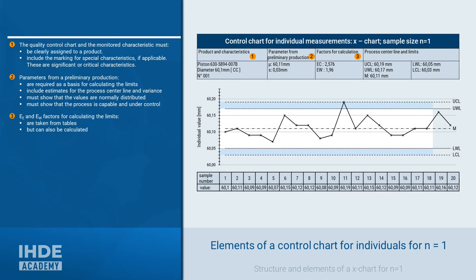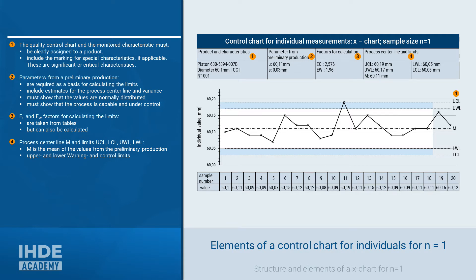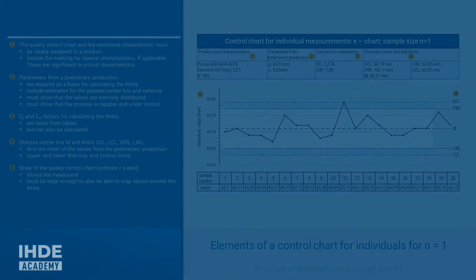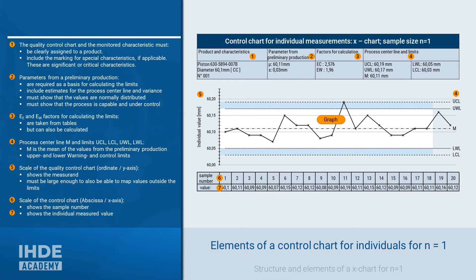The calculation method and the underlying statistical parameters are to be specified on the control chart. The values for the lower and upper warning limits, if any, and the values for the lower and upper control limits are to be documented. M is the mean value resulting, for example, from the pre-series production. The mean is also referred to as the production mean, center line, or process location. The scale for the measured variable must be chosen so it can also record values outside the control limits. After this brief repetition of the elements of a quality control chart, the calculation begins in the next chapter.